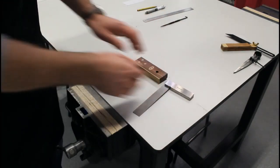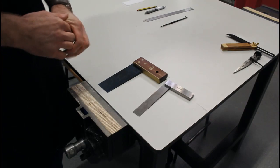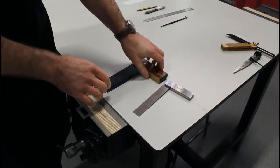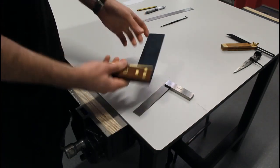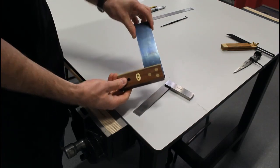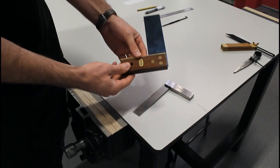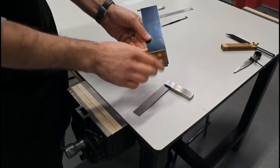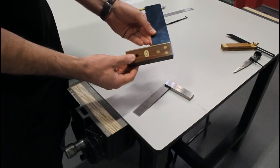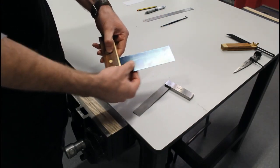Our next two marking out materials are known as squares. This one here is called a trisquare, mainly used for wood. It's made up of a stock or a handle. This is known as the blade.